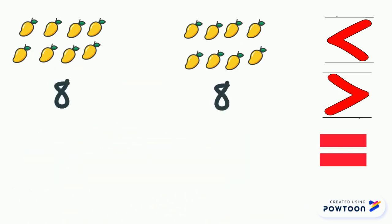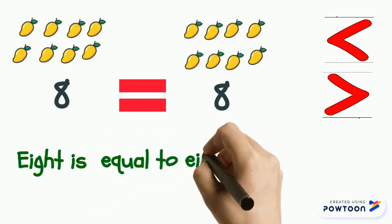In this last example, count the mangoes and you will detect that none of these numbers is bigger than the next. So you should use the equal sign to say that eight is equal to eight.